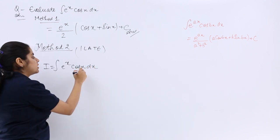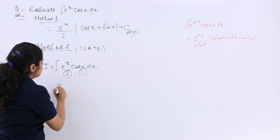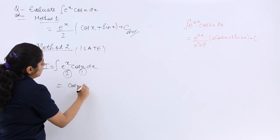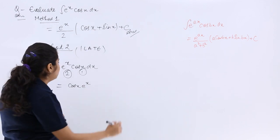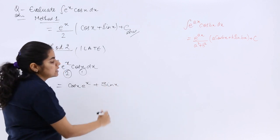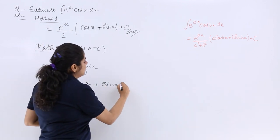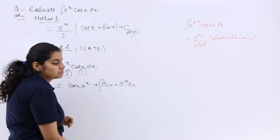I know my first function should be trigonometric, second should be exponential. So it is first function into integration of second, which is in short e raised to the power x only, minus differentiation of first, minus minus making it plus, into integration of second, whole integration.